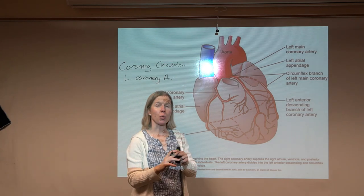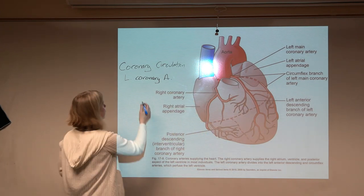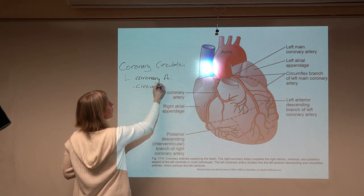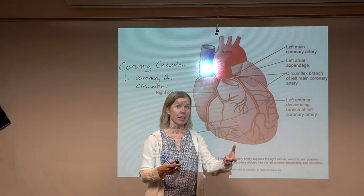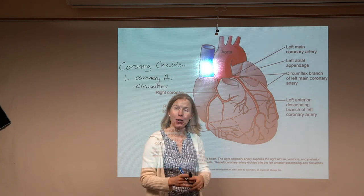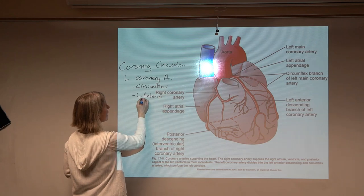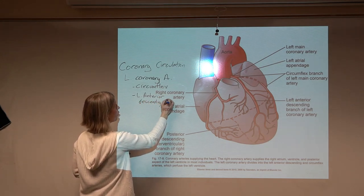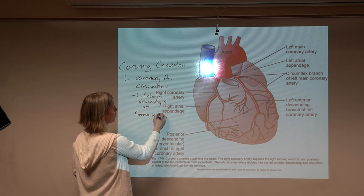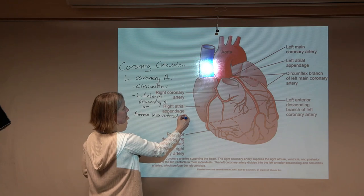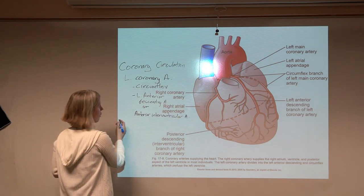The left coronary artery has two main branches. Wrapping around the left side of the heart is the circumflex artery. The other branch is called the left anterior descending artery, also called the anterior interventricular artery. These branches supply the left side of the heart.